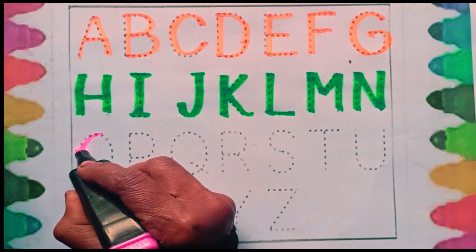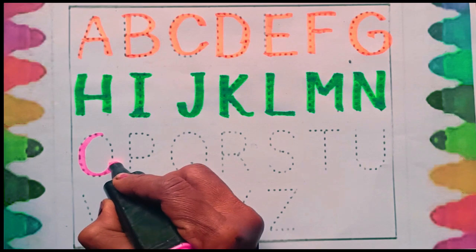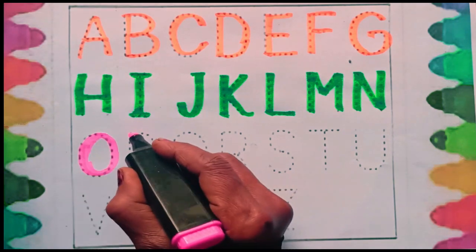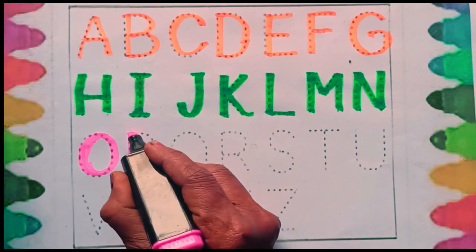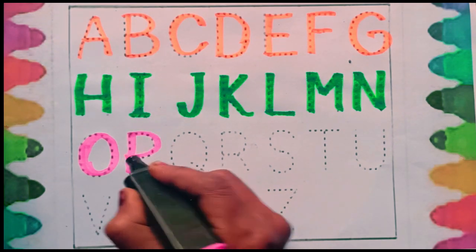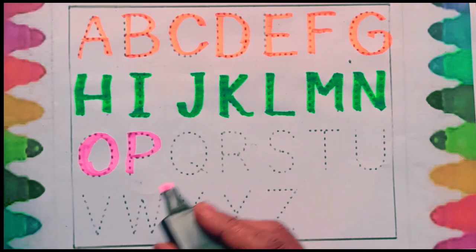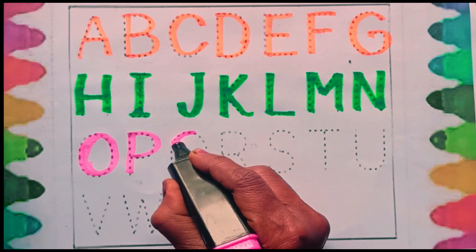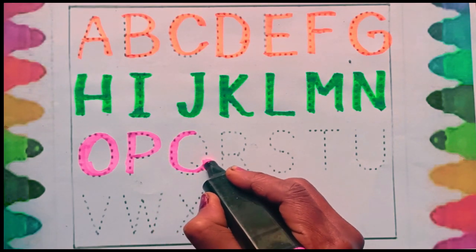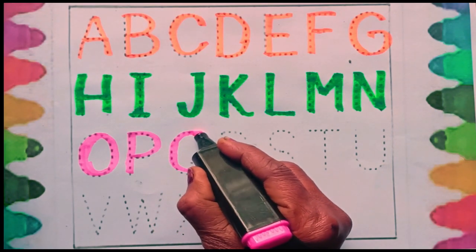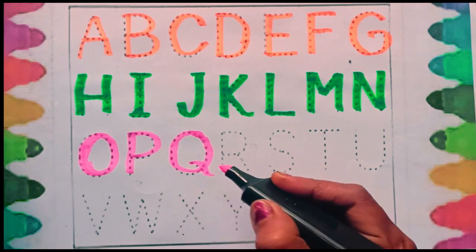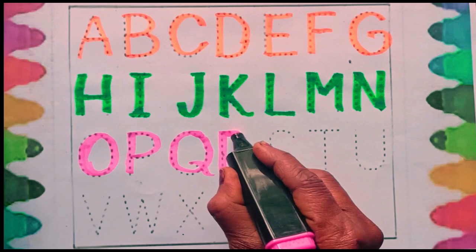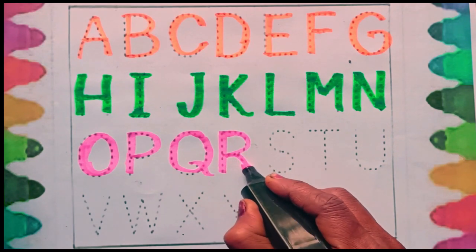O. O for owl, O for onion. P. P for peach, P for rats, P for sweets.